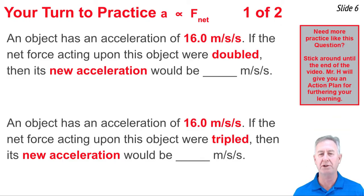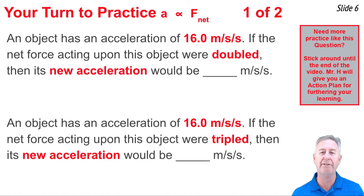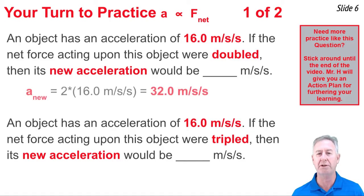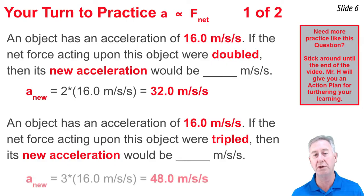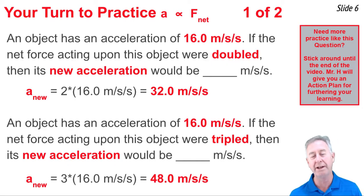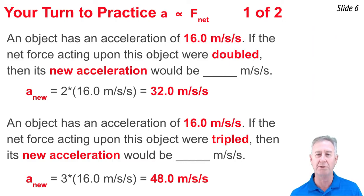In this first question, the original acceleration is 16 meters per second squared and the F_net is doubled. If the F_net is doubled, we have to double the acceleration. The new acceleration will be 2 times 16 meters per second squared, giving us 32 meters per second squared. For the second question, the F_net is tripled, so we triple the acceleration. Tripling 16 meters per second squared gives us 48 meters per second squared.